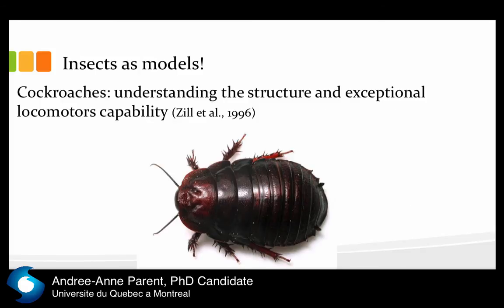Also, insects are a model — like the cockroach. We try to understand the structure and the exceptional locomotor capacity, because they have a large, very strong structure, but we don't fully understand how they can achieve such fast locomotion with this kind of exoskeleton.